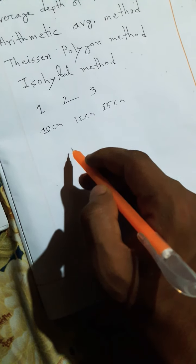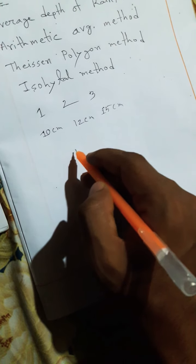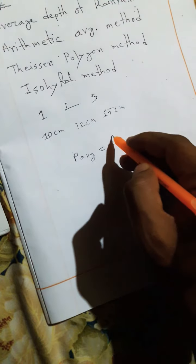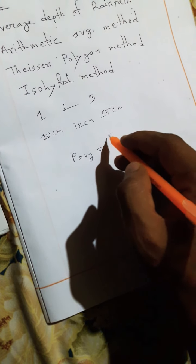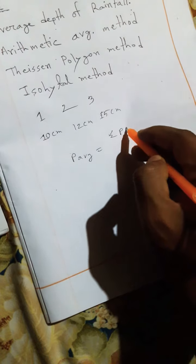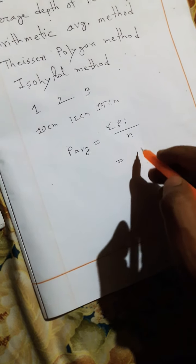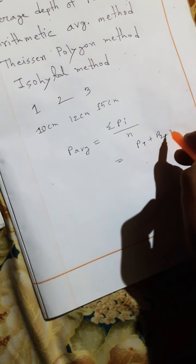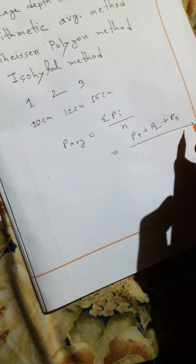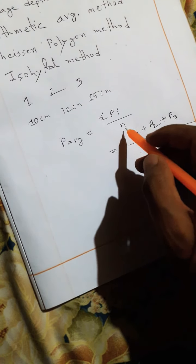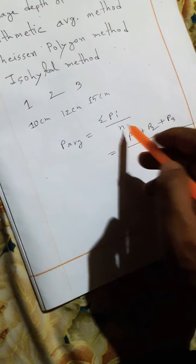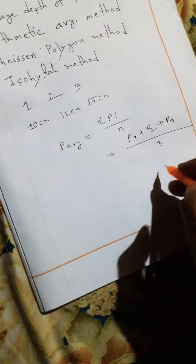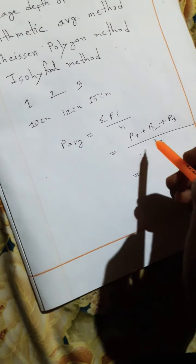So what is the average depth of precipitation? Summation of Pi by n, where summation of P equals P1 plus P2 plus P3. The number of stations is 3, so n equals 3. The value of P1 is 10 centimeters.